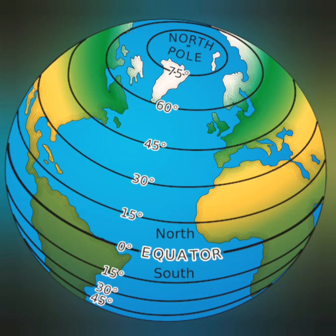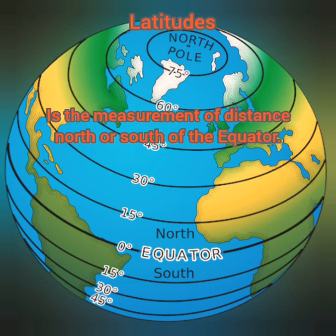Hello friends, today I am going to talk about latitudes and longitudes, which are basically imaginary lines that divide the earth into different sections. These are very important for us to locate places on the map, find out where we are exactly on the globe, and calculate the time and distance between two places. So let's talk about latitudes first.